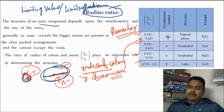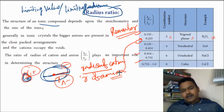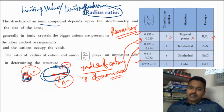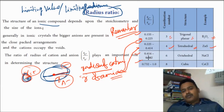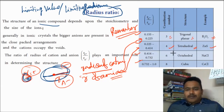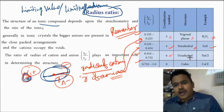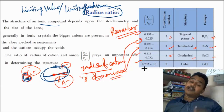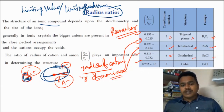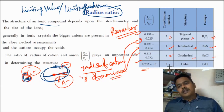The radius ratio (Rc/Ra) value falls in certain ranges. If the value is below 0.155 to around 0.225, the coordination number is 3 and the structure is trigonal planar — example: B₂O₃. If the radius ratio is between 0.225 and 0.414, the coordination number is 4 and the structure is tetrahedral — example: ZnS. If it is 0.414 to 0.732, the coordination number is 6 and the structure is octahedral — example: NaCl. If it is 0.732 to 1, the coordination number is 8 and the structure is cubic.